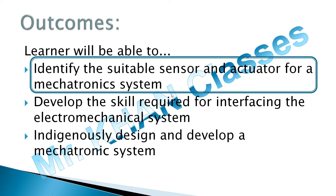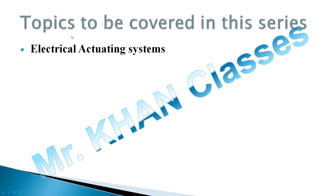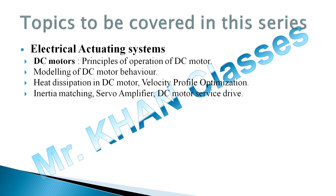Now let's see the topics to be covered in electrical actuating systems. First, I will start with the DC motor. What will I cover in DC motor: the principle of operation of DC motor, modeling of DC motor, heat distribution in DC motor and how it takes place, various types of velocity profiles, optimization, temperature matching, duration, what is a servo amplifier, its benefits, and the different DC motor servo drives. These will be covered in the next four videos, approximately 2.1 to 2.4.